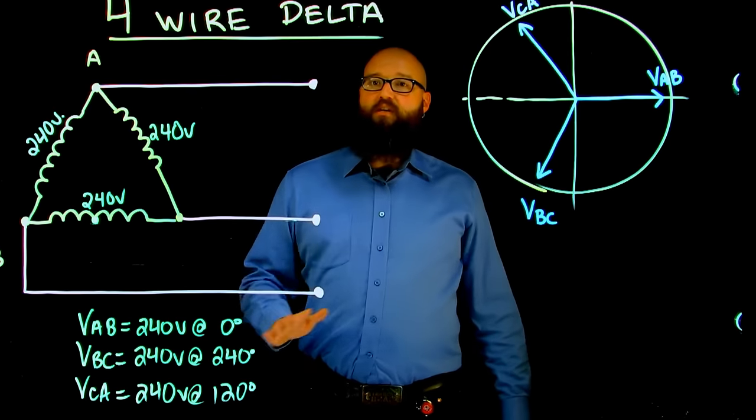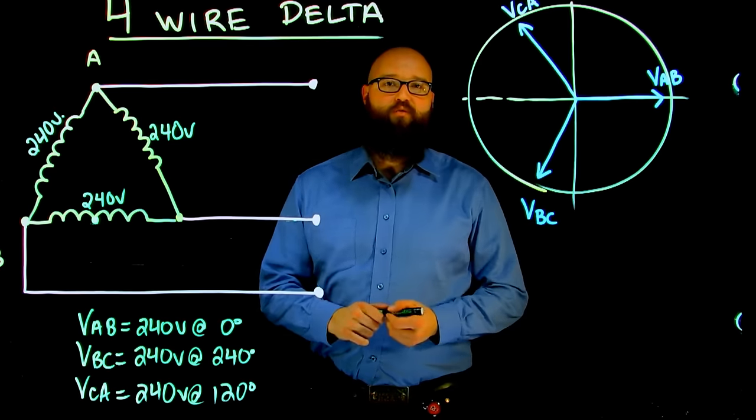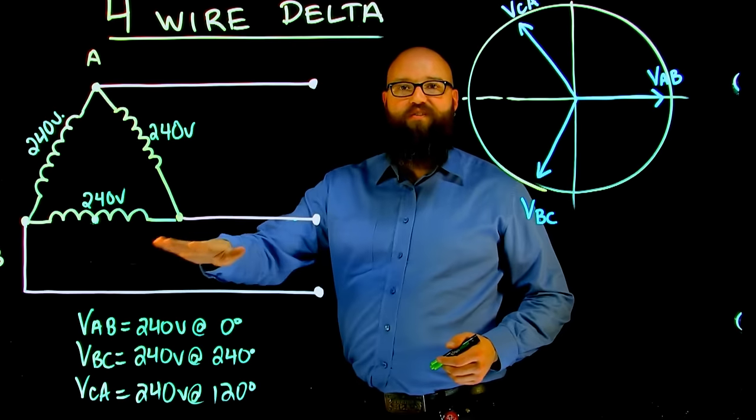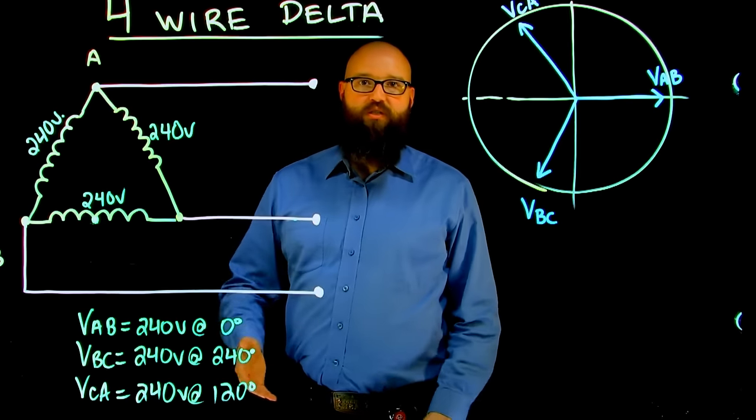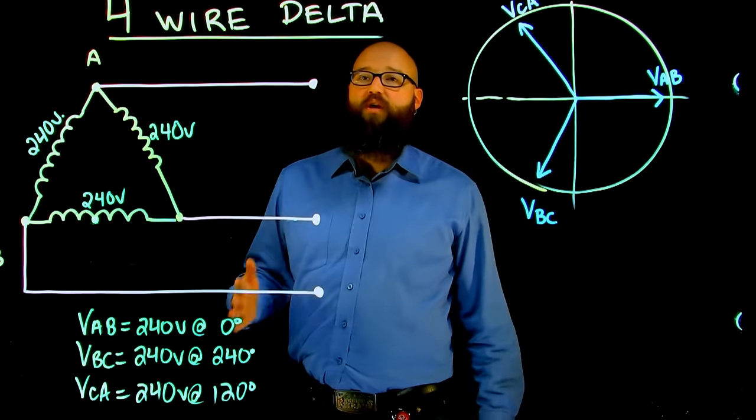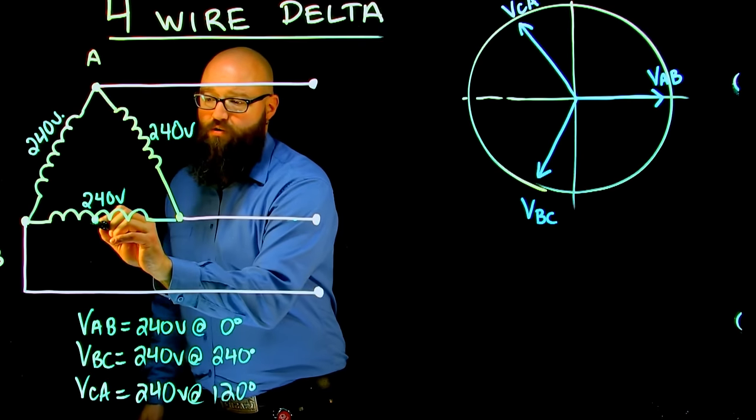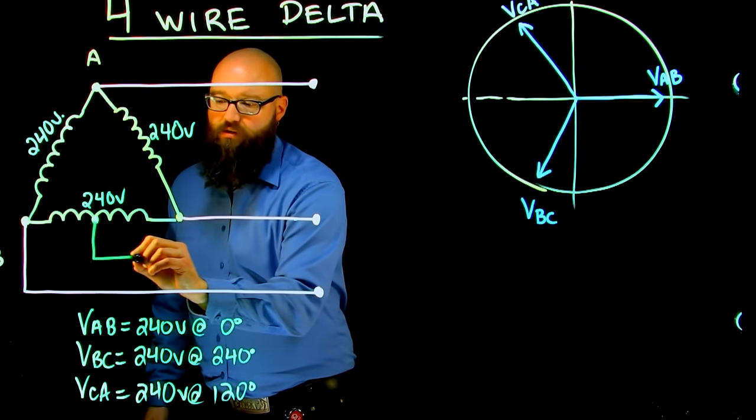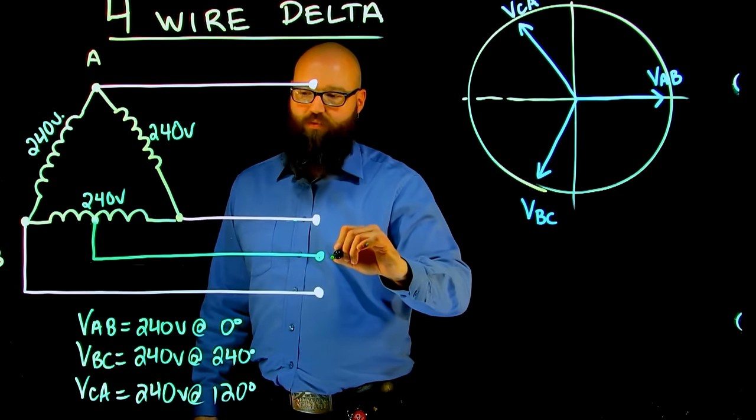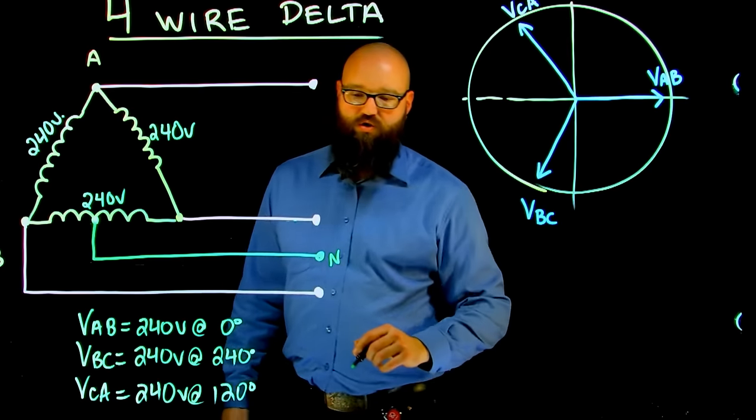So with a four-wire delta system, we have another set of voltages that we can use simply by center tapping one of these windings. Now with voltages and transformers and turns ratios, we know that if we have half the turns, we're going to end up with half the voltage. So when we tap this right at the center point, we bring it out here. We're going to call this for now, we're going to call this our neutral.